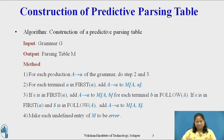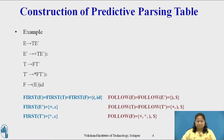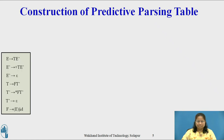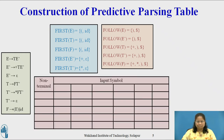Consider the grammar for arithmetic expression with the productions given below. In the previous video, we already considered how to compute First and Follow sets for this example. First and Follow sets for this grammar are given. Now we are going to consider how to construct the Predictive Parsing Table. The parsing table consists of input symbols in columns, while the non-terminals will be in the rows of this table. Now consider how to fill entries in this table.